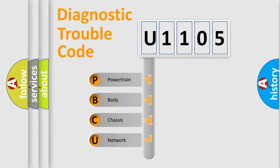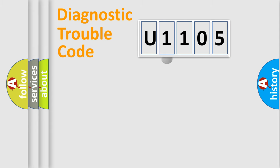We divide the electric system of automobile into four basic units: Powertrain, Body, Chassis, and Network. This distribution is defined in the first character code.